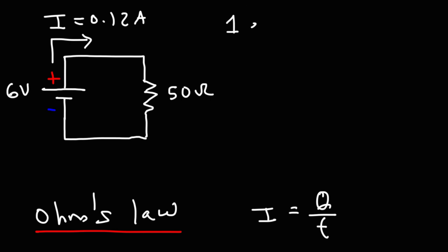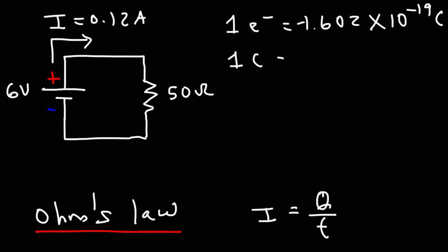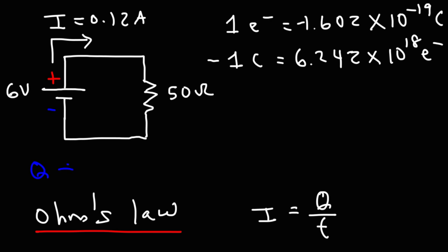One electron has a charge of negative 1.602 × 10⁻¹⁹ coulombs. So 1 coulomb of charge represents a certain quantity of electrons. If you take 1 divided by 1.602 × 10⁻¹⁹, you get that 1 coulomb of charge represents 6.242 × 10¹⁸ electrons. Electric charge Q is related to the quantity of electrons.